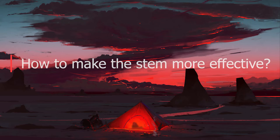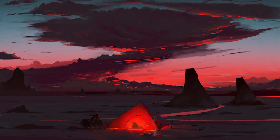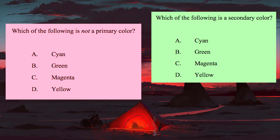How to make the stem more effective? A stem should be complete and meaningful on its own. A precise stem makes for a focused learning outcome. The stem should avoid using negative statements. This will help ensure that any incorrect response represents an individual who did not know the answer, as opposed to individuals who were confused by the language of the stem.